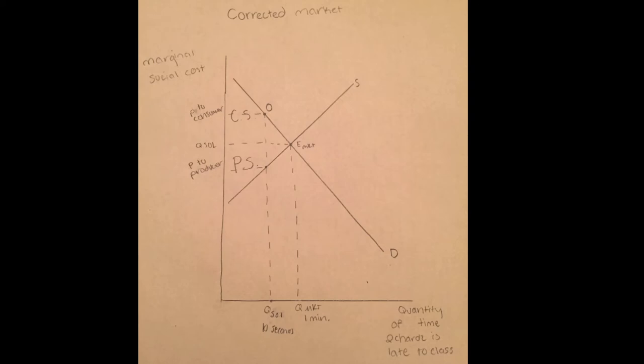Now, because of the Pigouvian tax, we have now reached a socially optimal level of me being 10 seconds or less late to class. The penalty for me being late to class is: every day I'm late, we will add one day that I am not able to go to Moe's. This will break me. Normally just thinking about something this sad would make me teary-eyed, but I am all out of tears because the Lego Movie got snubbed at the Oscars.